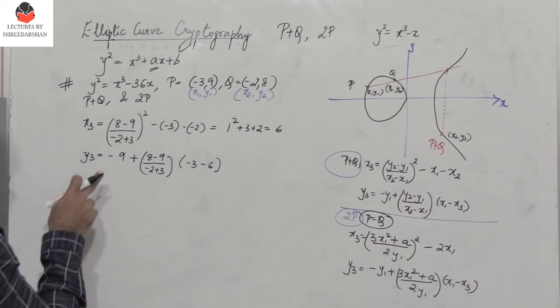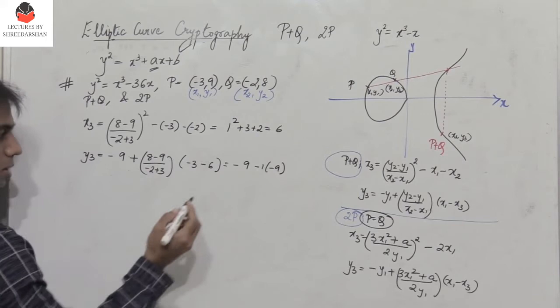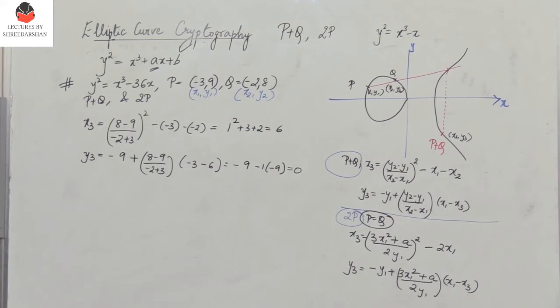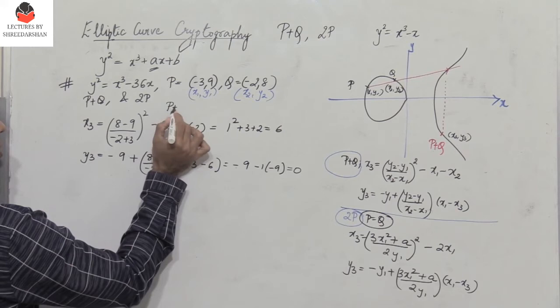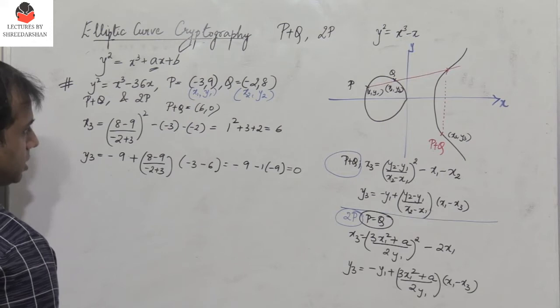That gives 1 squared plus 3 plus 2, so x3 equals 6. For y3: minus y1 is minus 9, plus (y2 minus y1) over (x2 minus x1) into (x1 minus x3). This gives minus 9 plus (minus 1 over 1) into (minus 3 minus 6), which is minus 9 plus (minus 1)(minus 9) equals minus 9 plus 9 equals 0. So P plus Q has coordinates (6, 0).